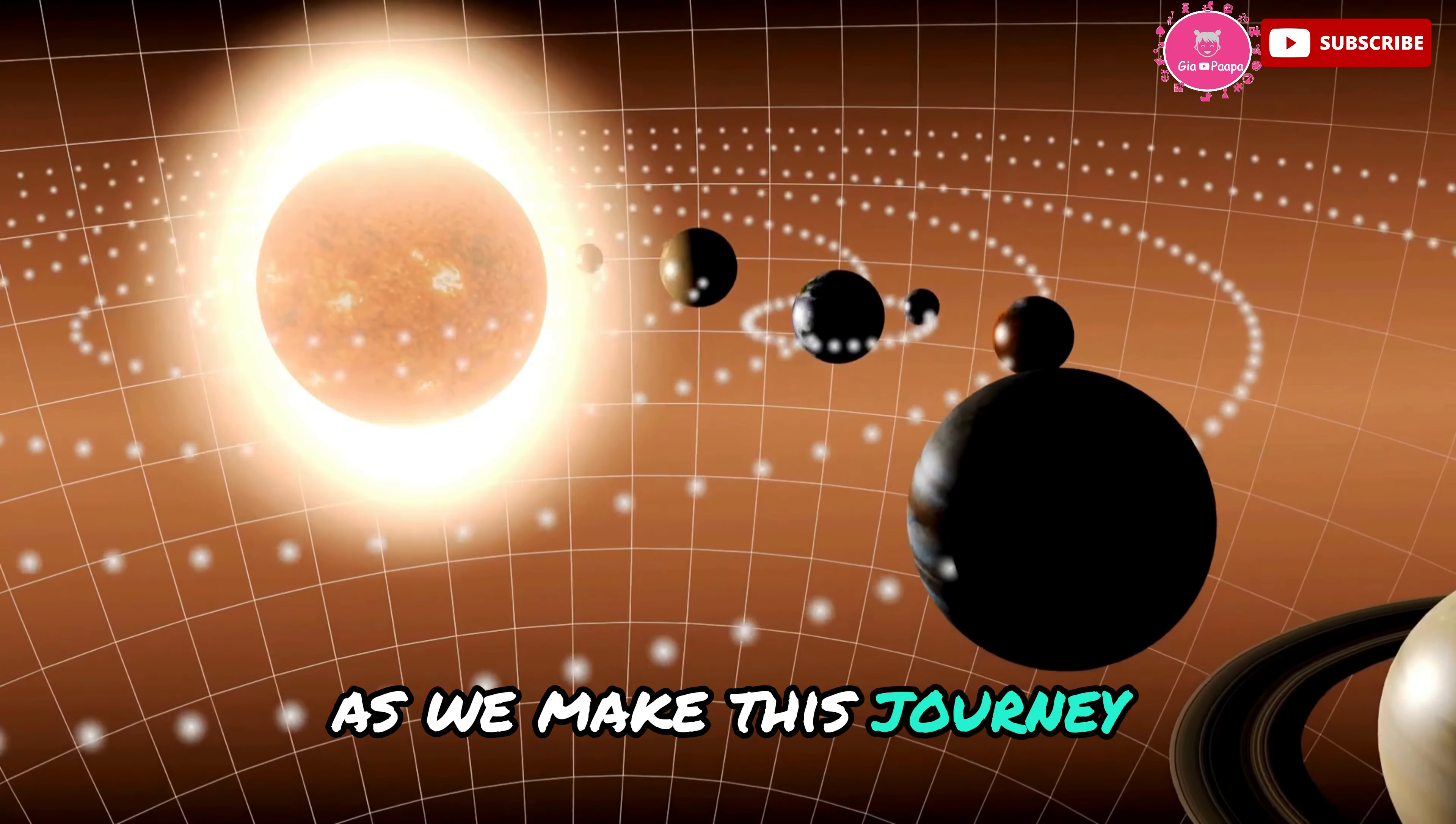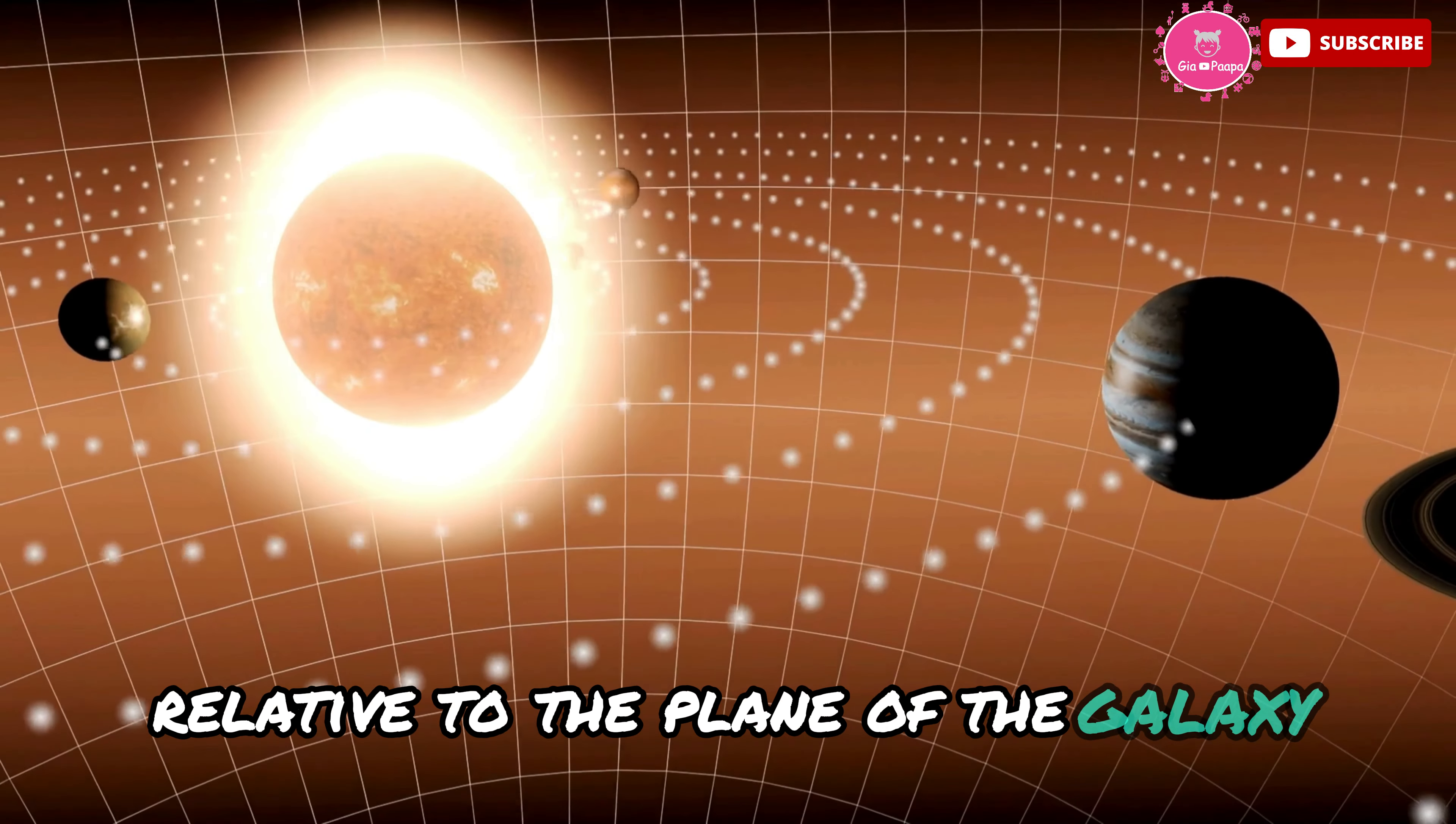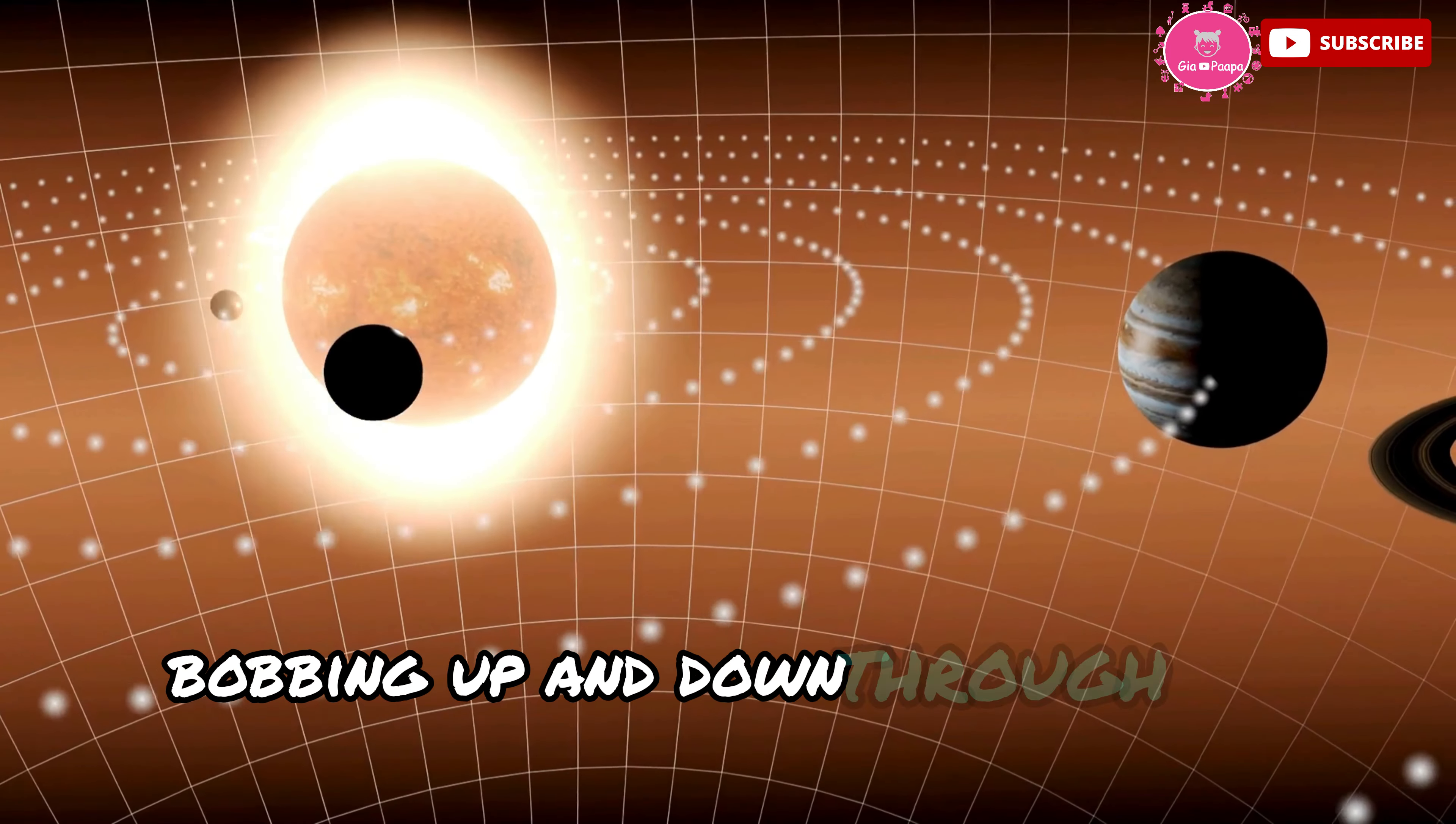As we make this journey, our solar system moves in a wave-like motion relative to the plane of the galaxy, bobbing up and down through the galactic disk.